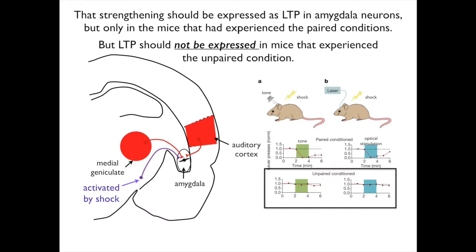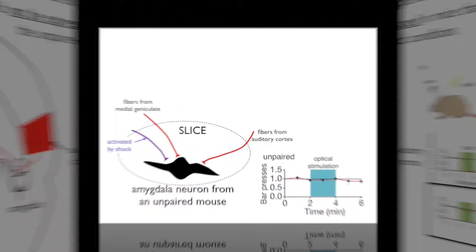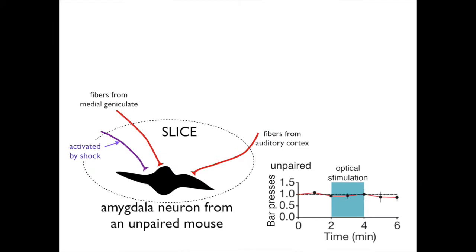The slice would look like the brain section in the left half of the slide. The brain is still alive, and they record from amygdala neurons in the slice. This modified drawing of a brain slice shows fibers transfected with channel rhodopsin from the auditory cortex, the transfected fibers from the medial geniculate, and the fibers activated by shock, which are not transfected. The slice is from a mouse that experienced unpaired optical stimulation and thus did not express fear when optical stimulation was presented alone.